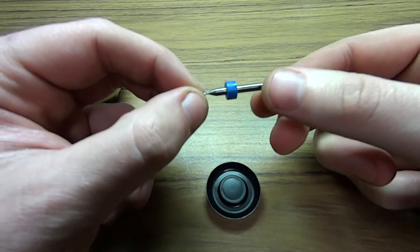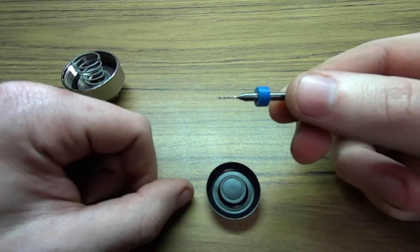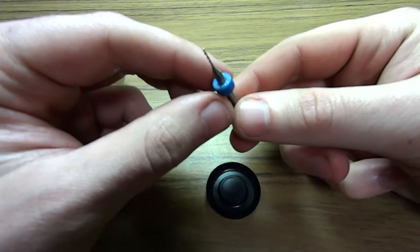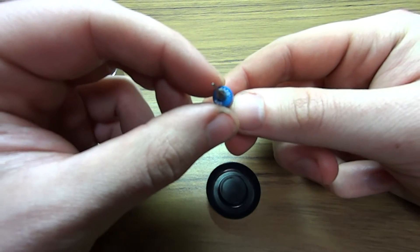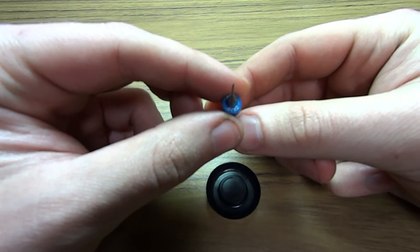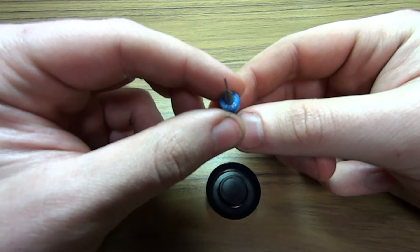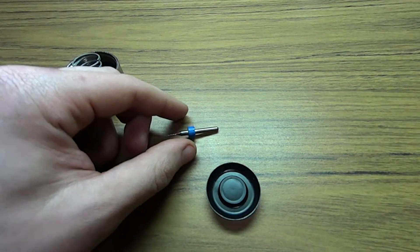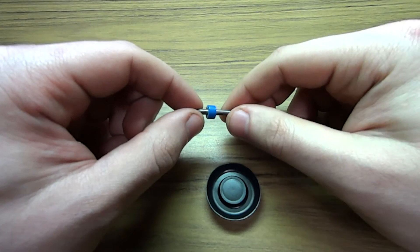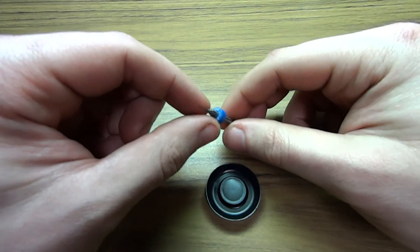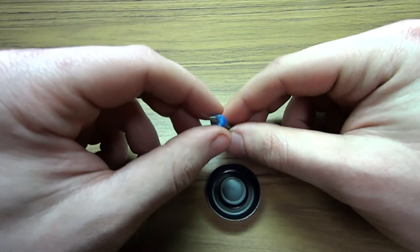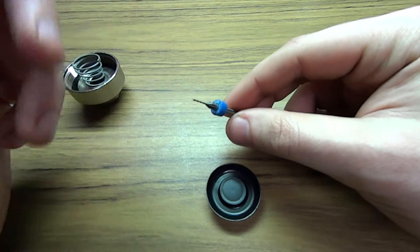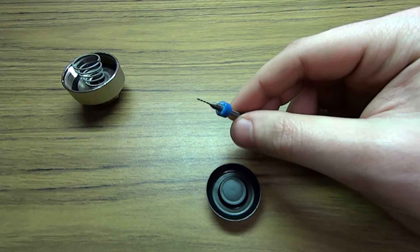This is the drill I used for it. This is a number 69 drill. For those of you who want an imperial measurement it's 0.0292. Anything around there would probably be fine like a 69, 70, 71, 72, 73, 74, 75. Anywhere in there should probably be fine.